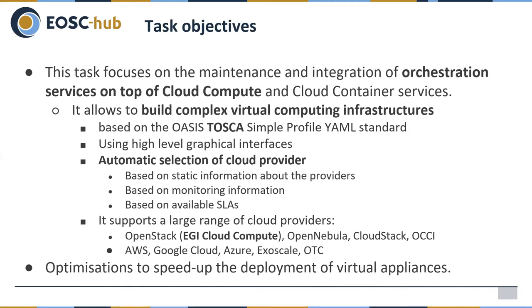This task is focused on orchestration services on top of Cloud Compute and Cloud Container services. These services allow you to build complex virtual computing structures. It is based on the Oasis TOSCA standard and uses high-level graphical interfaces. It enables the automatic selection of cloud providers based on provider information, monitoring information, and the available SLA between the user and the provider. It supports a wide range of cloud providers - not just EGI Cloud Compute but also OpenStack sites, OpenNebula, and public cloud providers like Amazon and Google Cloud.